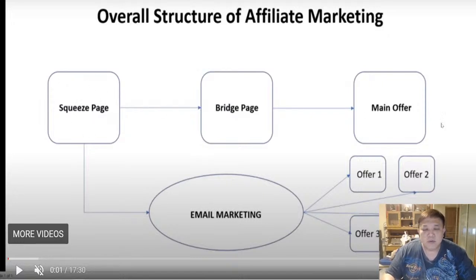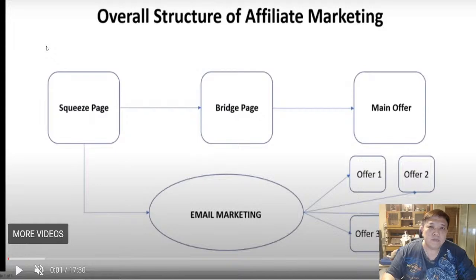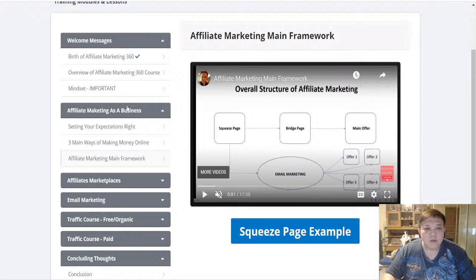Once you've collected email addresses, you go into your email autoresponders such as Mailchimp, Active Campaign, GetResponse, or Aweber. Post Profit comes in at the traffic stage — even before the squeeze page — channeling all the organic traffic from the eight social media platforms within the software itself.